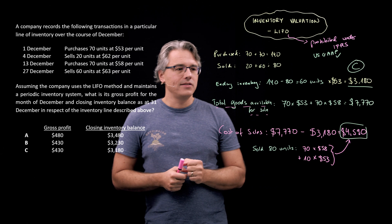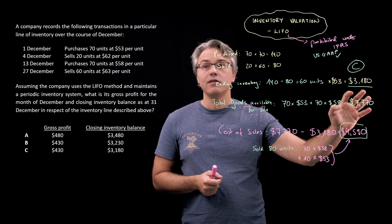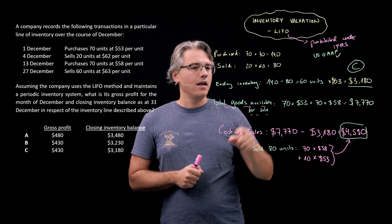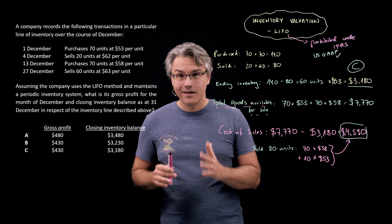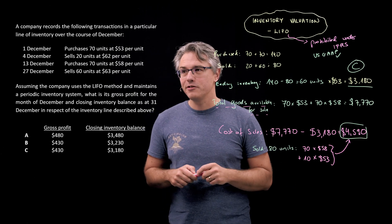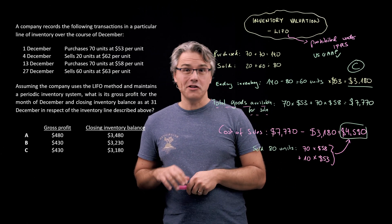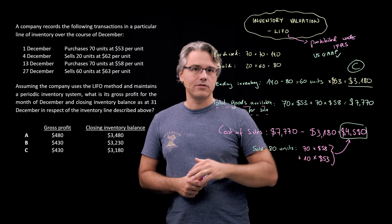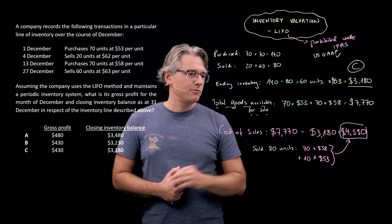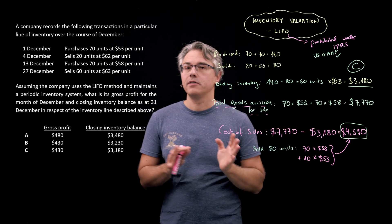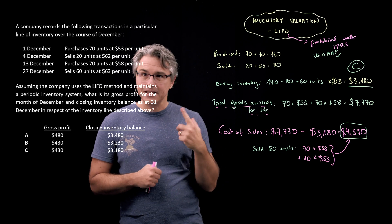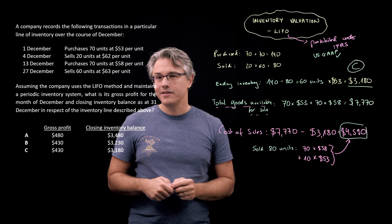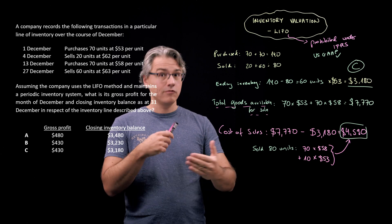We perform this computation based on the total goods available for sale during the period, irrespective of when they entered the company. When asked to perform such exercises under a periodic inventory system, forget about the physical reality. Compute ending inventory under the relevant cost flow assumption, compute total goods available for sale — which is the same whether you apply FIFO or LIFO — and then derive cost of sales as simply the difference between the two. This frees your mind from worrying about whether goods were really available for a specific sale.